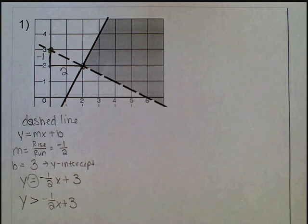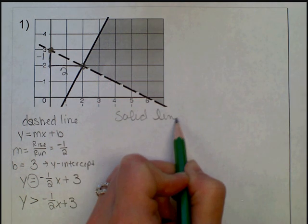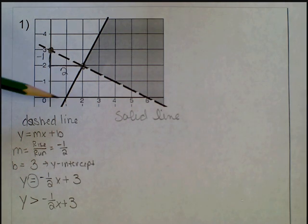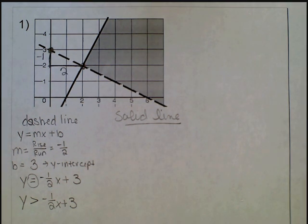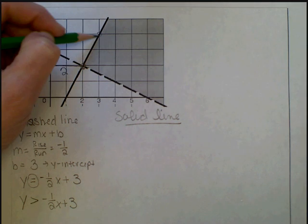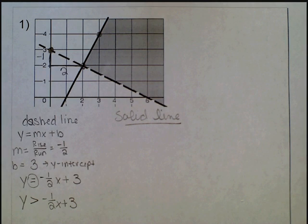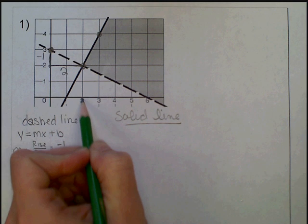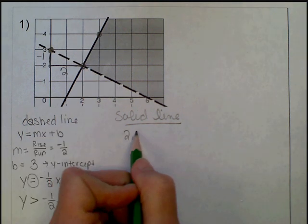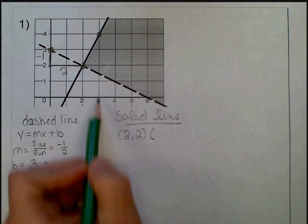Now I'll write the equation for the solid line. As you can see, I cannot see the y-intercept, so I'll use the second set of steps. I'll locate two points on this line — I'll use the intersection point and another point. My two points are (2, 2) and (3, 4).